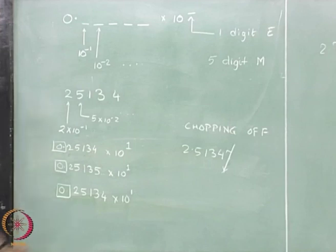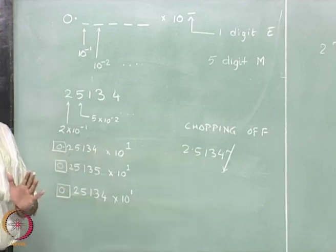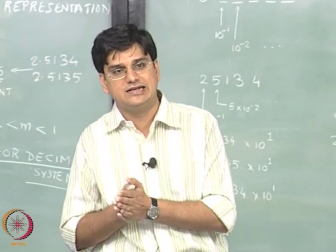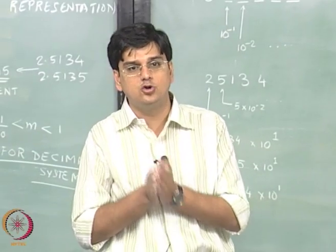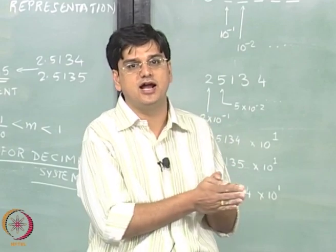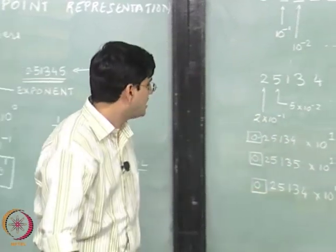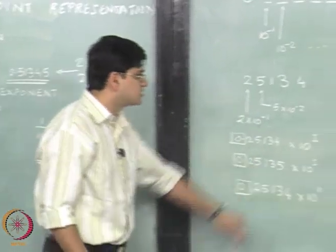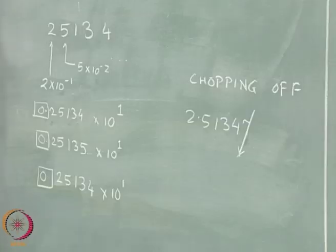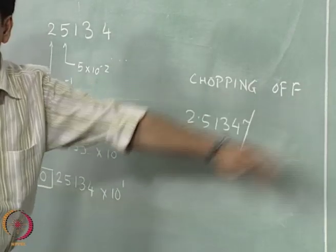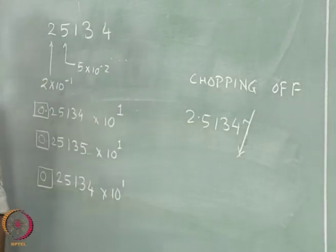Coming back to where we started — we were talking about errors and said there are two types: truncation error and roundoff error. The roundoff error comes about because a finite precision machine is chopping off digits of a number.